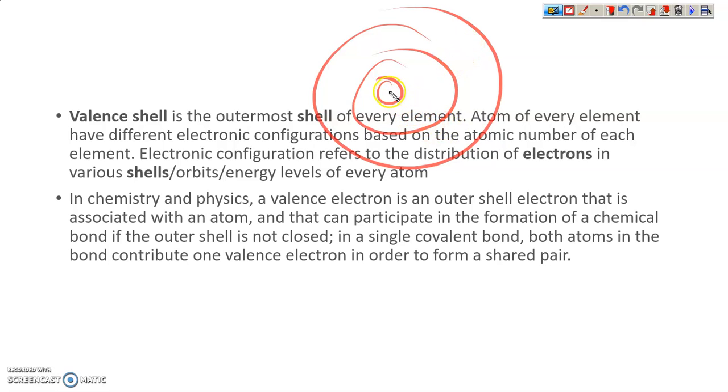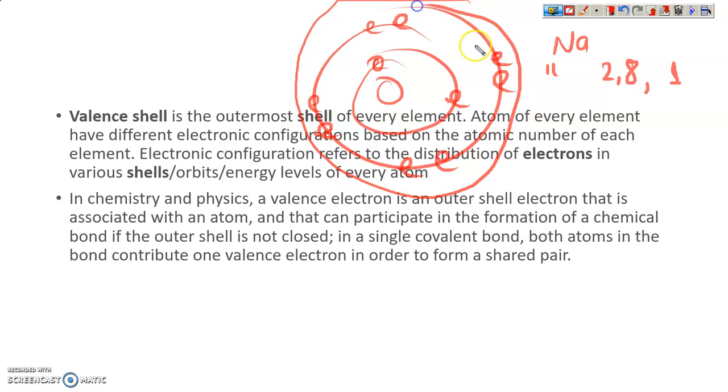Sodium has atomic number 11, so it is 2, 8, 1. We will see 2 electrons here, then 8 electrons - 1, 2, 3, 4, 5, 6, 7, 8 - and in the outermost there should be 1 electron. So this is the valence electron and this shell is the valence shell.